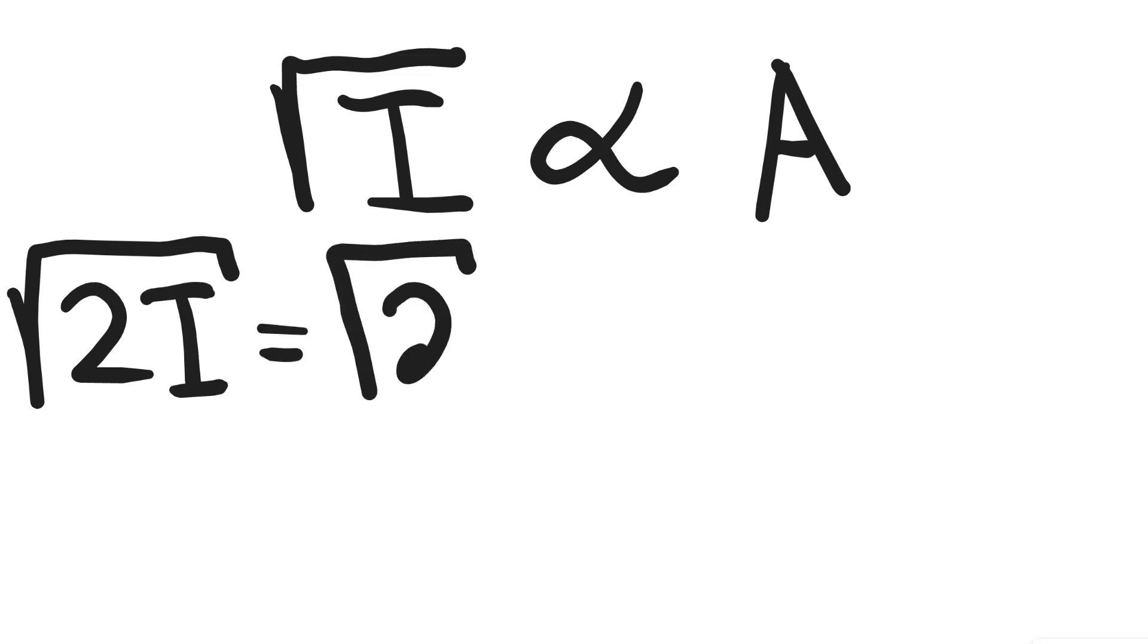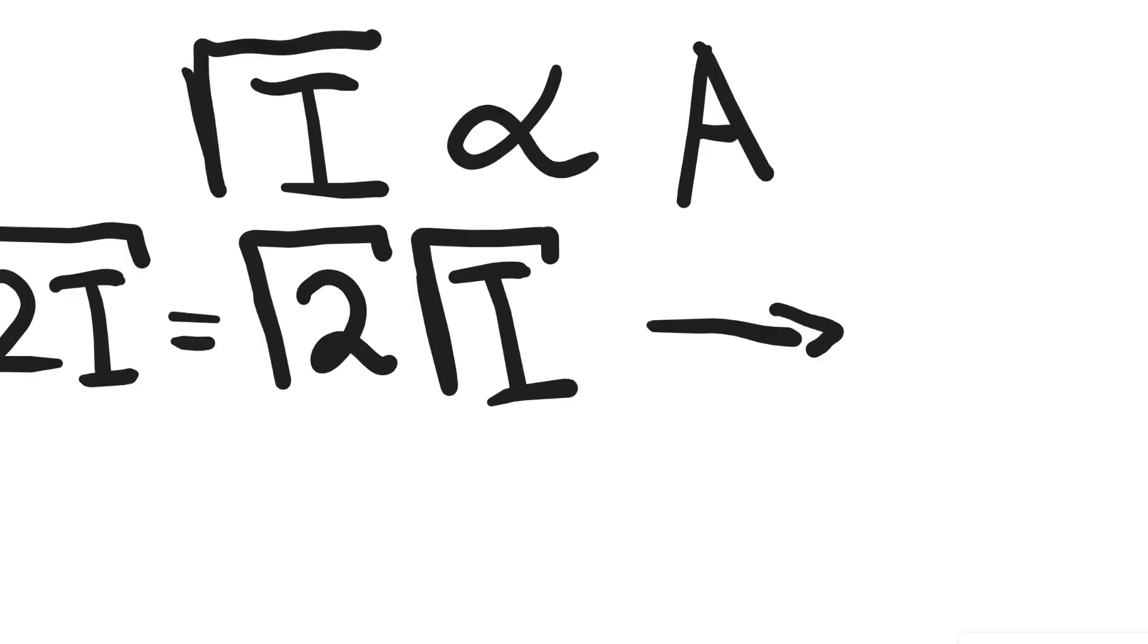So if I double the intensity, I get an additional factor of two underneath the square root sign, meaning that the original intensity will be multiplied by root two. And because it's proportional to the amplitude, this means that the amplitude will increase by a factor of root two.